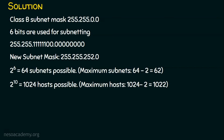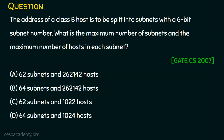But based on the question, you can decide. The answer is Option C — 62 subnets and 1022 hosts. Why not 64 subnets and 1024 hosts? Though we get 64 subnets and 1024 hosts, we always need to subtract 2 from the result obtained. I hope you guys enjoyed this lecture, thank you.